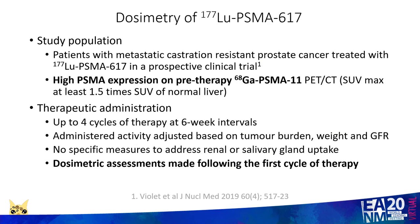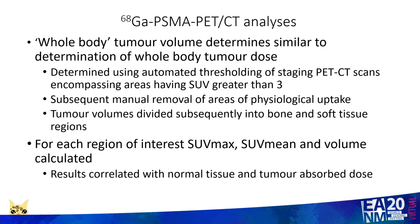The study population for our dosimetry work was 30 patients being treated within a prospective clinical trial. All patients had to show high PSMA expression on a pre-therapeutic gallium PSMA PET scan and received up to four cycles of therapy with a dose adjusted based upon tumour burden, weight, and GFR. Dosimetric assessments were made following the first cycle of therapy. In addition to determining whole body tumour absorbed dose, we also determined whole body tumour volume on the staging gallium PSMA PET scan, using a similar thresholding approach with removal of physiological areas of uptake.